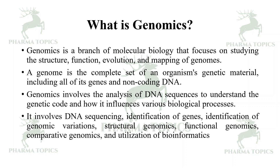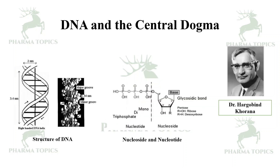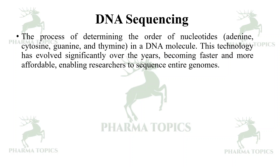The base of genomics is DNA and the central dogma, which was established by Dr. Harbin Khorana. The structure of DNA is a double helix. The nucleosides — A, T, G, C — and nucleotides are with triphosphate groups. DNA sequencing is the process of determining the order of nucleotides in the DNA molecule — how A, T, G, C are arranged.